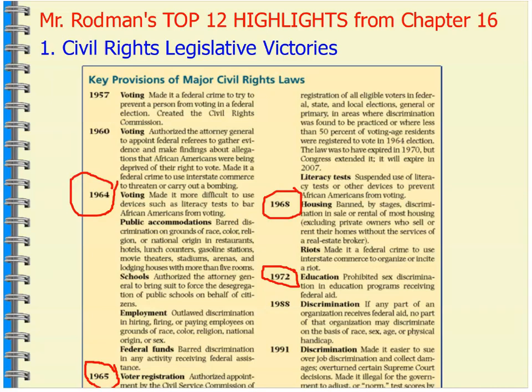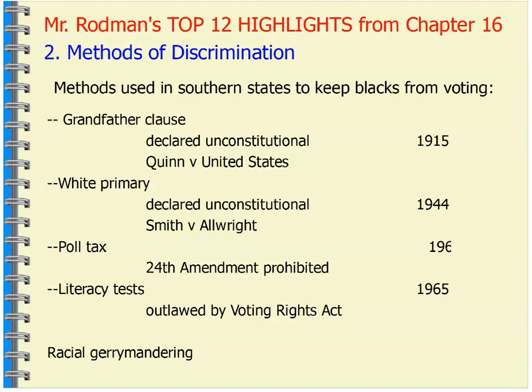We had a lot of civil rights bills in the 1800s and moving forward, but they were so watered down by the time they got through the Senate because of filibustering that they had very little meaning. It really wasn't until the 1964 Civil Rights Act that we saw significant changes. We saw a lot of discrimination continuing: grandfather clauses, white primaries, poll taxes, literacy tests — all of these things being eliminated, other than racial gerrymandering, which we saw in Shaw v. Reno.